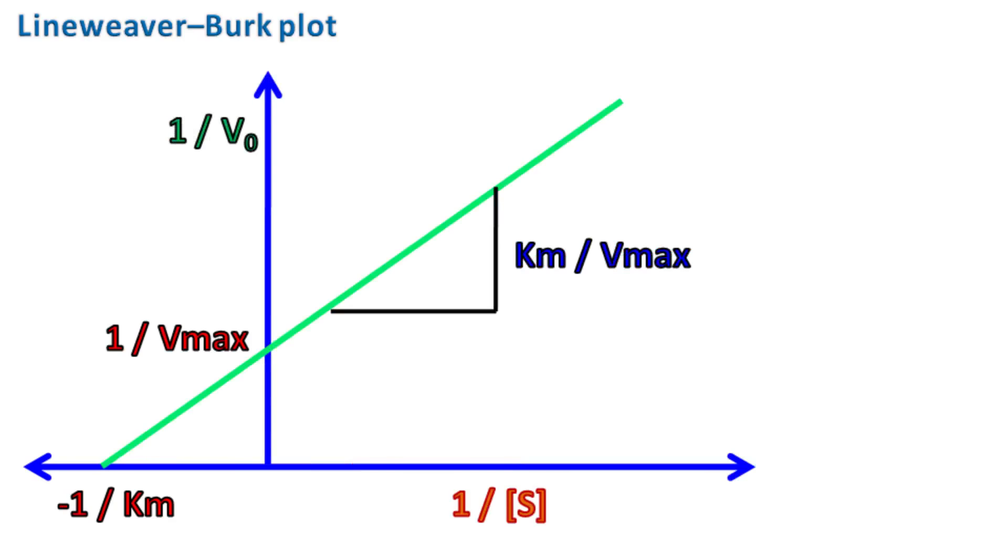Because it's a straight line graph, the estimate of Vmax becomes easy as 1 by Vmax is the intercept on Y axis. Any change in the value of Km or Vmax can be easily spotted just by looking at the graph.